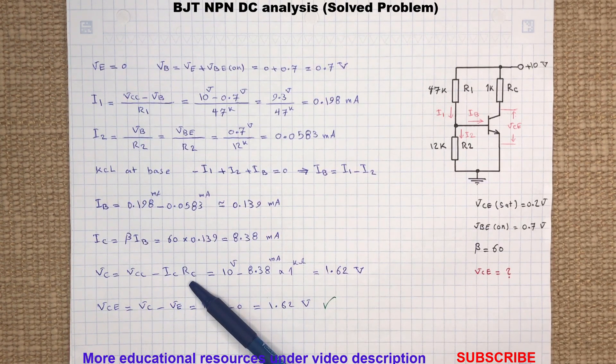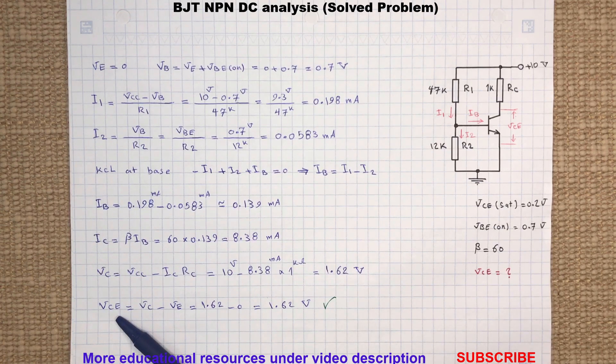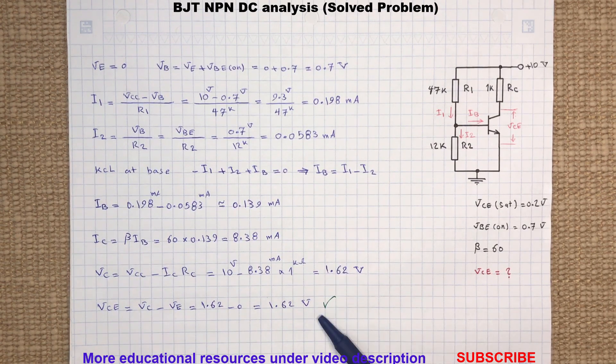We find the collector voltage by subtracting the voltage drop across resistor RC from the supply voltage. The collector-emitter voltage will be the collector voltage minus the emitter voltage.